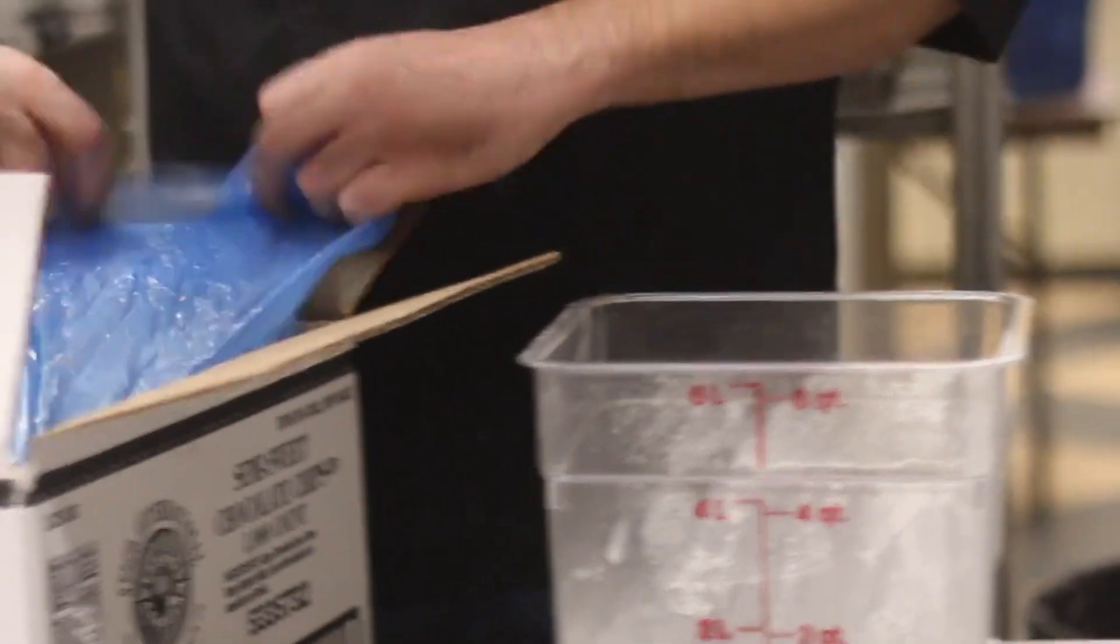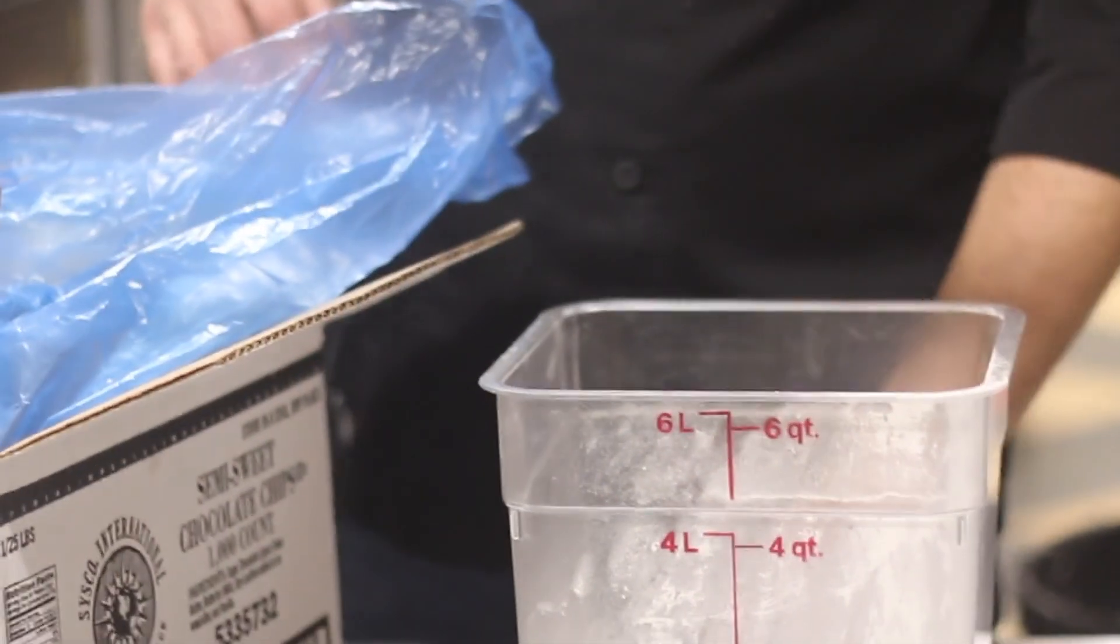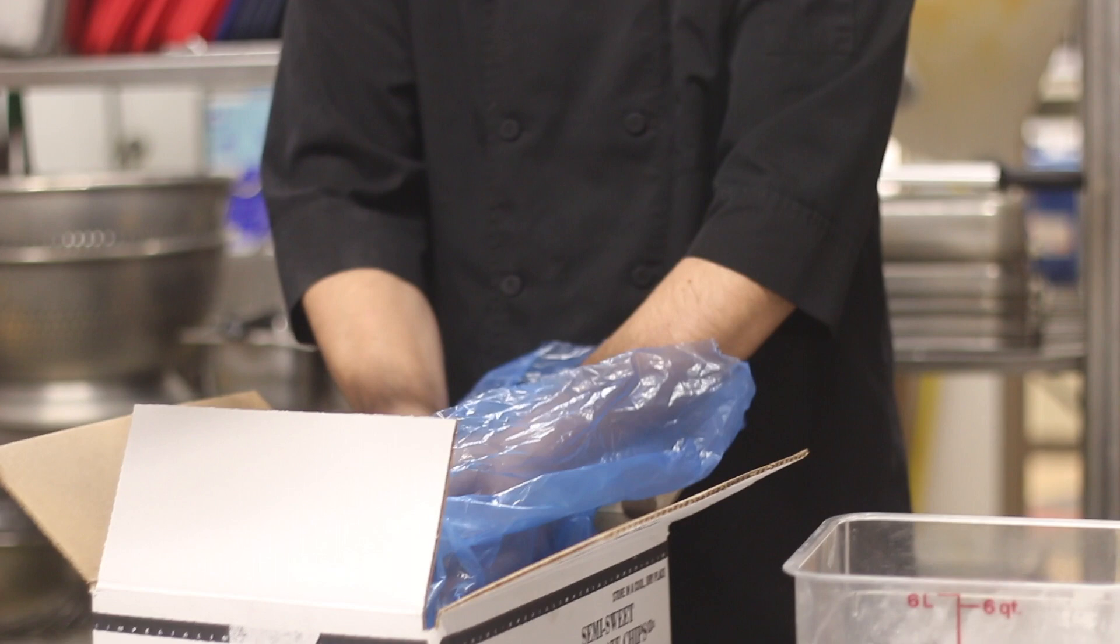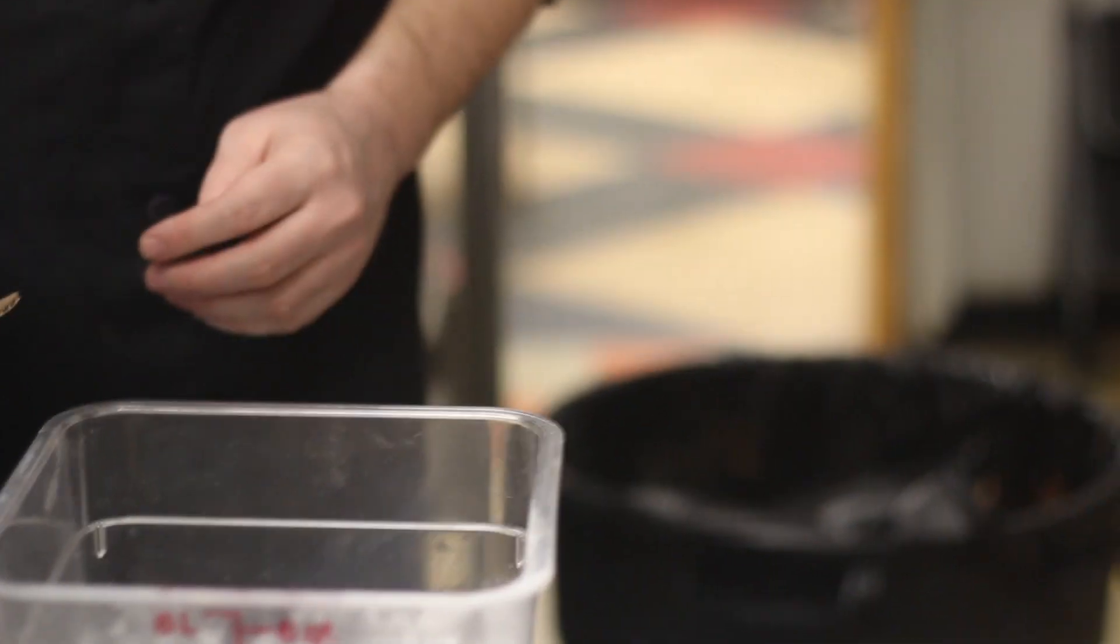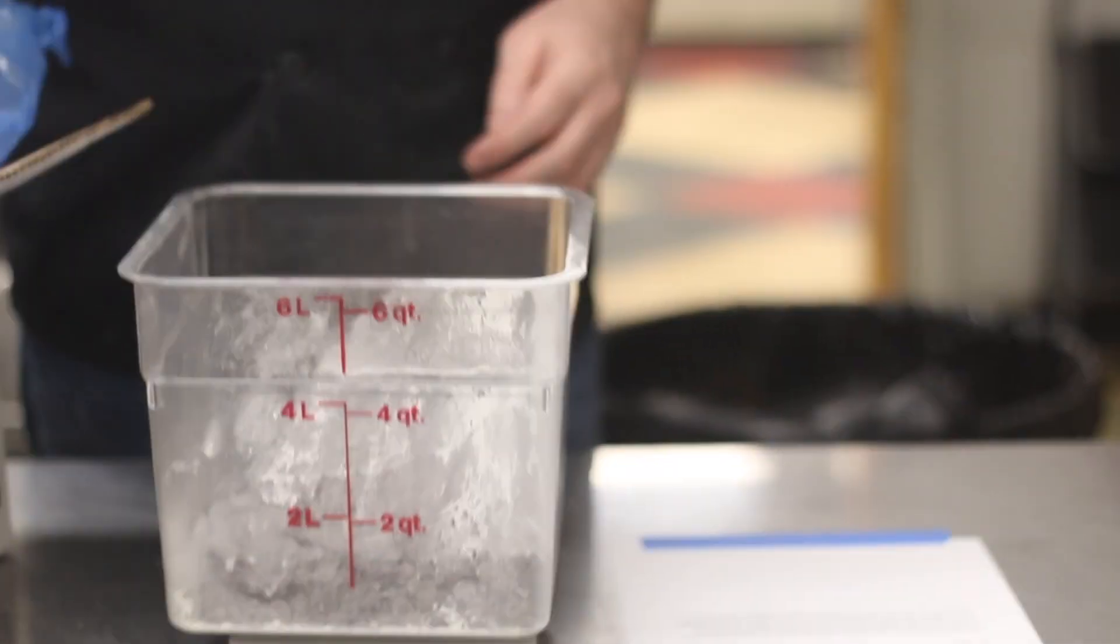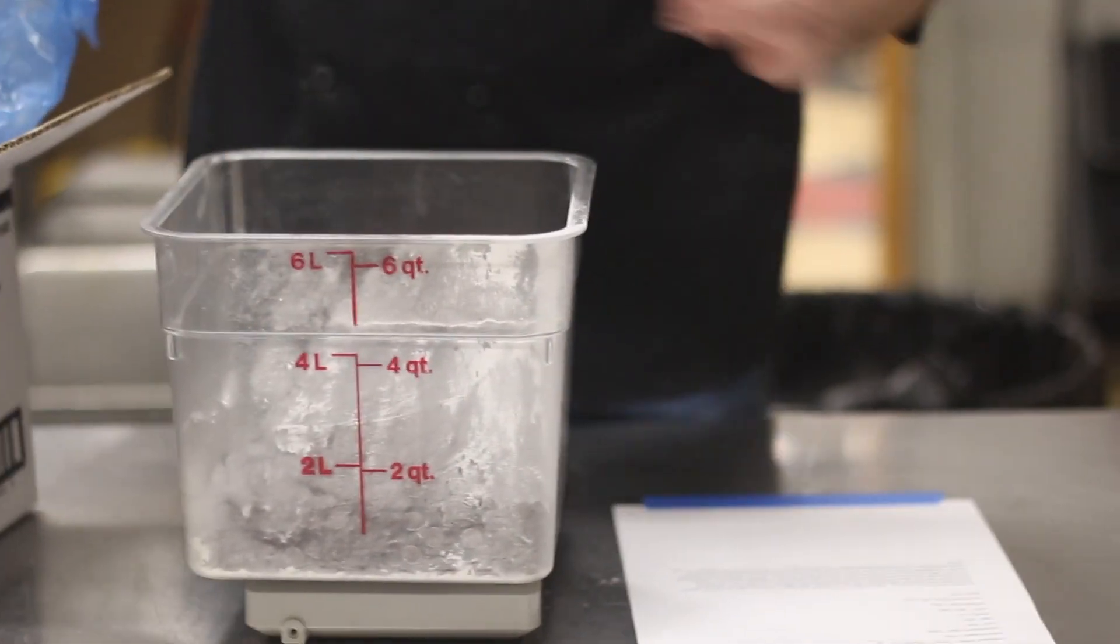We're going to get our oats and the chocolate chips ready. It's going to be 1 pound, 14 ounces of chocolate chips. Then we need 6 ounces of oats.